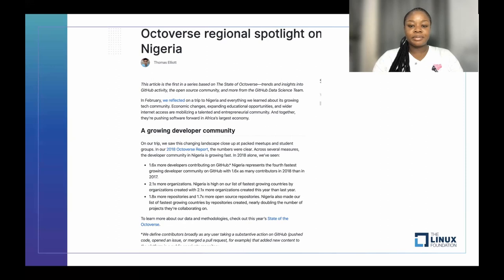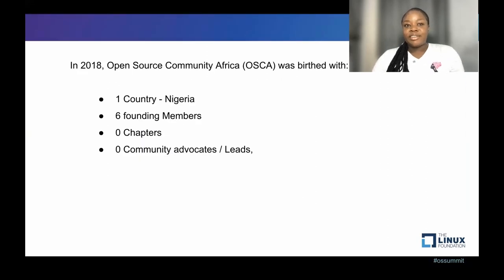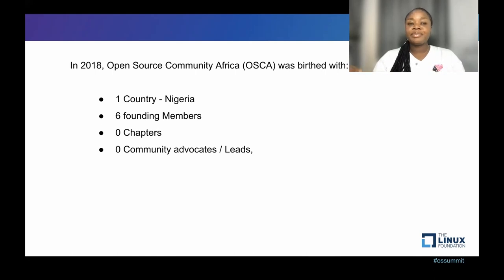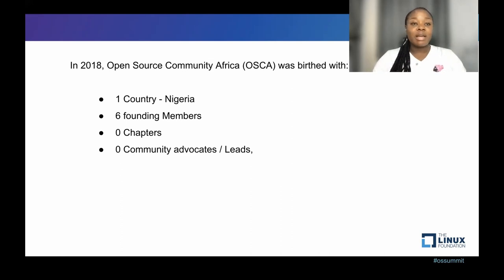All of this is to say that when we tried to found this community, it was only an idea. As of 2018 when we tried to start, we had a presence in just one country — Nigeria — because we were all Nigerians. Six founding members, zero chapters, zero community advocates. Nobody knew who we were or what we were doing. And as of then, the enthusiasm for open-source contribution, the evangelism, the gospel — all of that about open-source wasn't as active as it is right now.